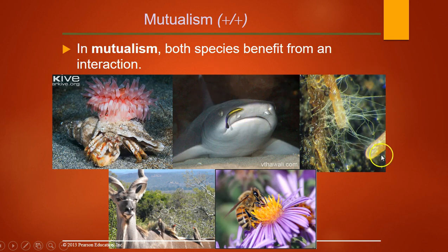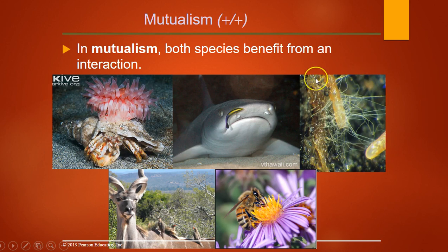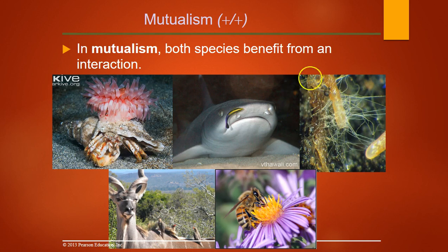This is probably the most important mutualism in the world and you may not know what it is. These are plant roots with fungus — this is called mycorrhizae. It's the fungus along plant roots that helps fix nitrogen; the plant gives it sugars in return. If a plant doesn't have this mycorrhizae, it doesn't grow well. All the plants in your backyard have fungus along their roots at the microscopic level allowing for growth.